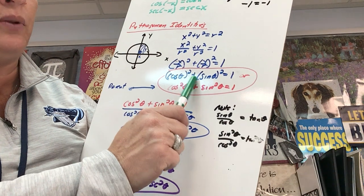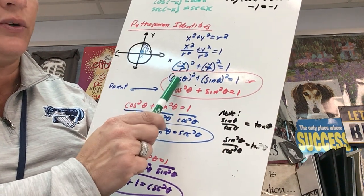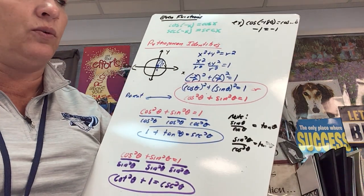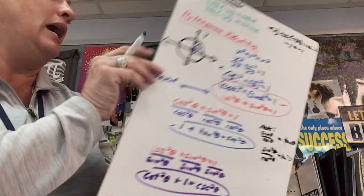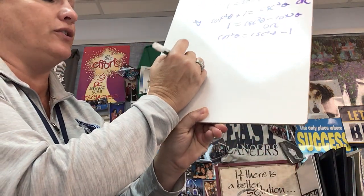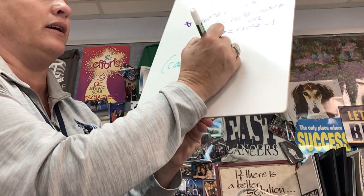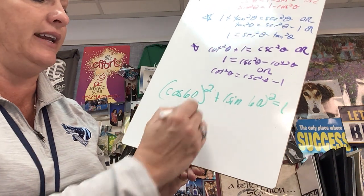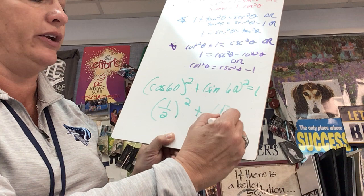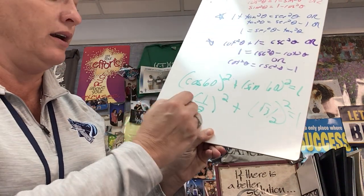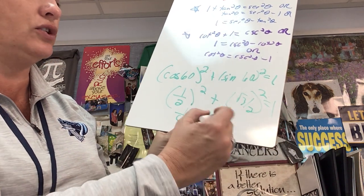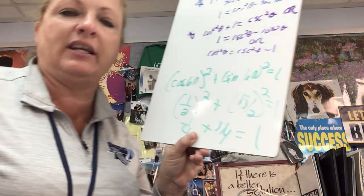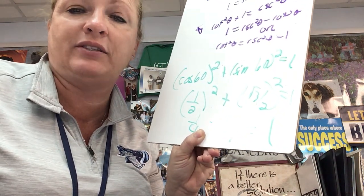Cosine squared plus sine squared equals 1. Whether you write it as cos²θ + sin²θ = 1, let me give you an example with 60°. Cosine of 60° is 1/2; squared, that's 1/4. Sine of 60° is √3/2; squared, that's 3/4. One fourth plus three fourths equals 1. I can't tell you enough: when you get an identity, put in some angles to verify why it's true.